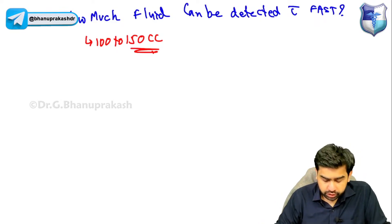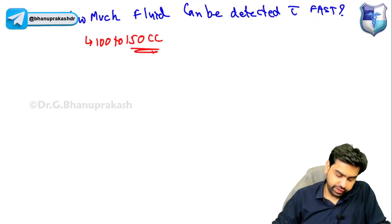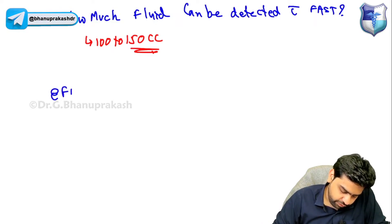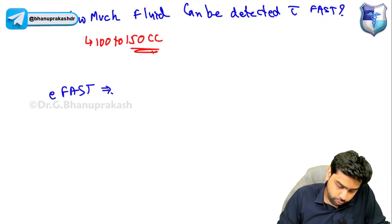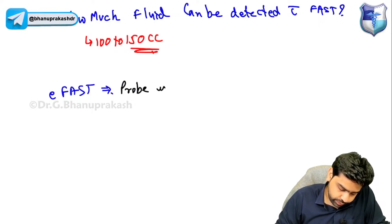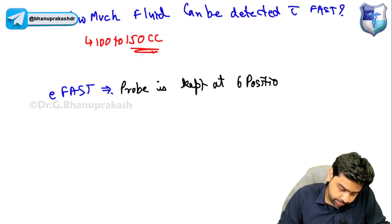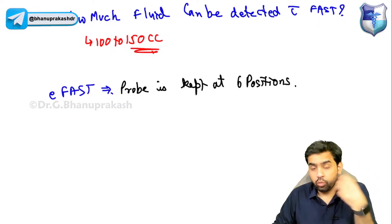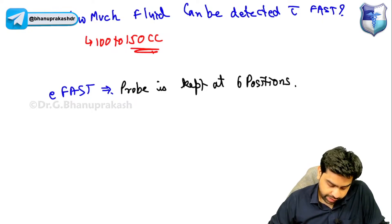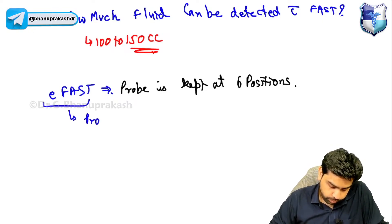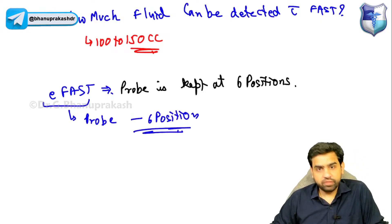The drawback of FAST is that we don't get information about the right and left lung fields. That is why we have E-FAST. In E-FAST, instead of keeping the probe at four positions, you keep the probe at six positions — the original four plus the right and left lung fields.